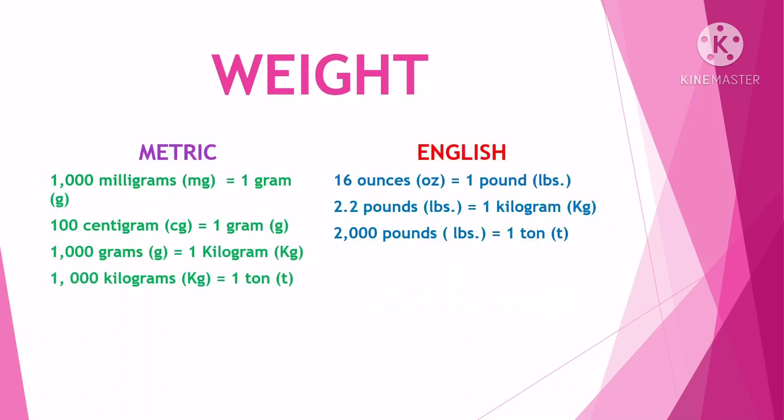For weight, metric: one thousand milligrams is equal to one gram, one hundred centigrams is equal to one gram, one thousand grams is equal to one kilogram, and one thousand kilograms is equal to one ton.